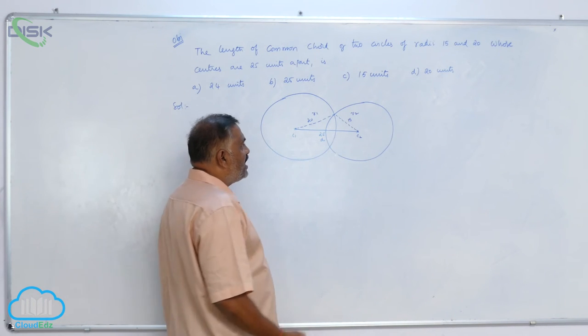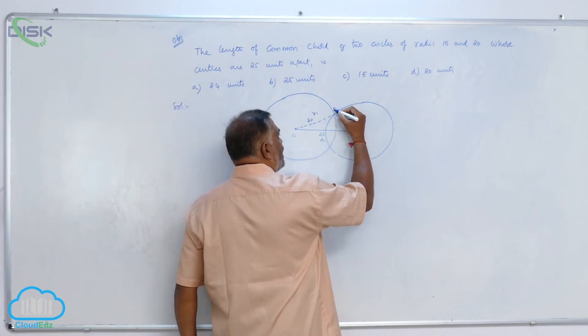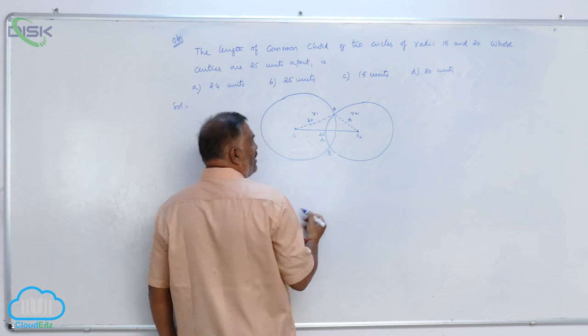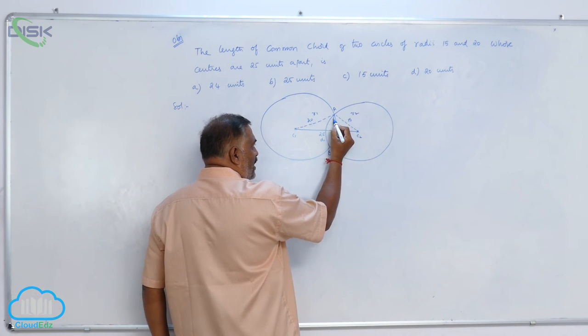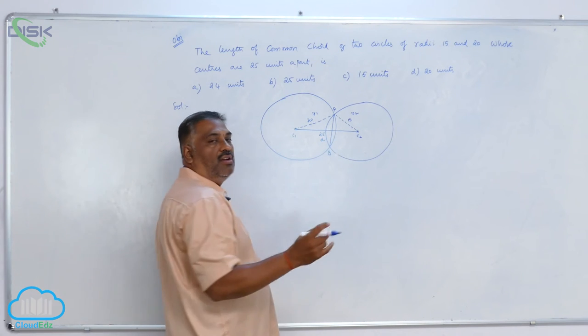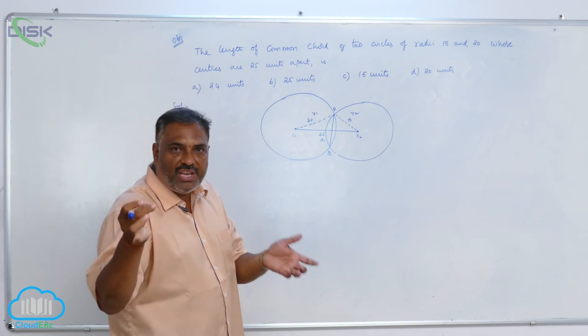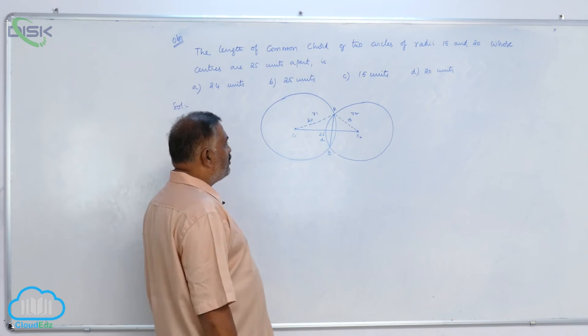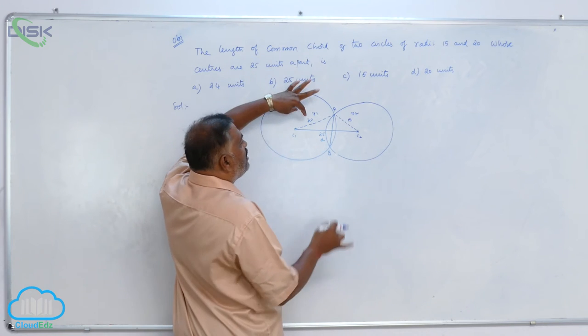We observe very carefully that there are two points of intersection A comma B. If you drop a perpendicular like this, AB is called length of the chord. That we need to find out.